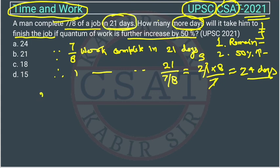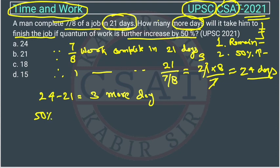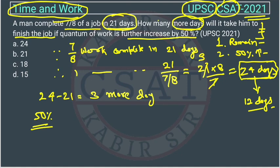He has already completed 21 days of work, so 24 minus 21 gives 3 more days to complete the remaining work. Now, the work is increased by 50 percent. Since he can complete the full work in 24 days, 50 percent of the work will take half of that — 12 days.